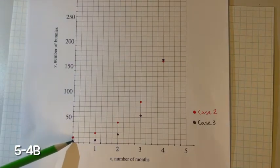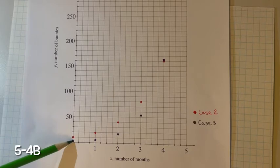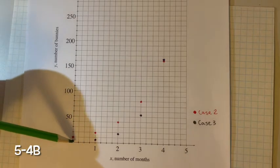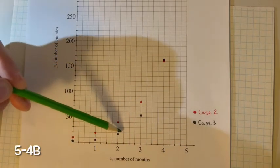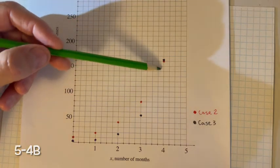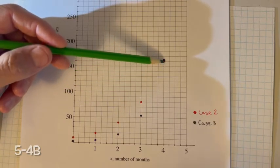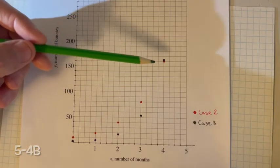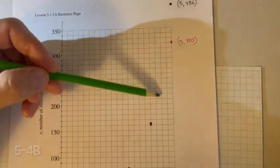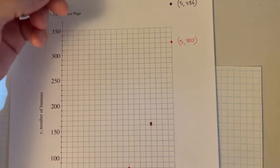Case 3 started out with 2 bunnies, but it's being multiplied by 3. It's tripling each month. Case 3 starts out slower and then increases rapidly. Eventually, it passes case 2 because it's being multiplied by 3 or tripling each time. You can see that this is going to be a steeper rate of change, and so the growth rate is greater.